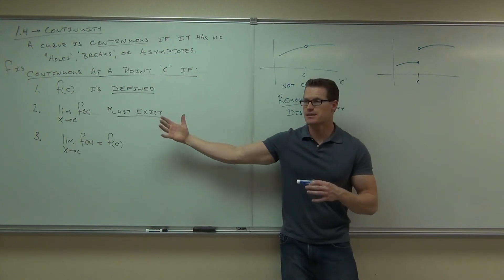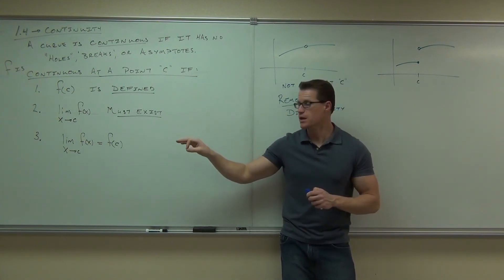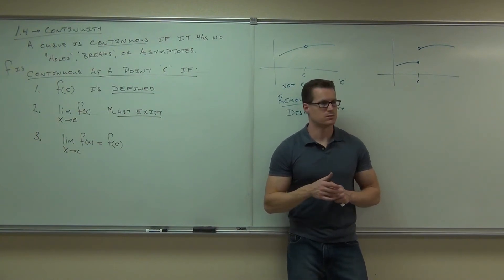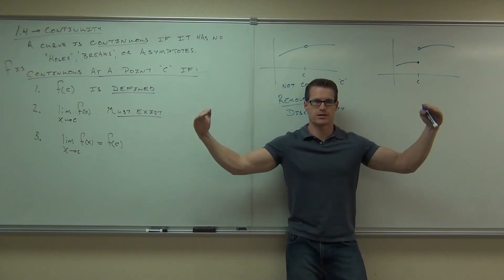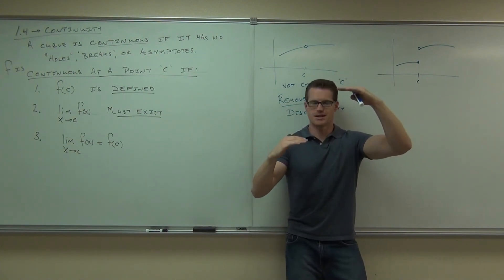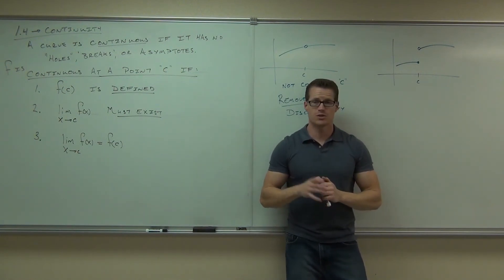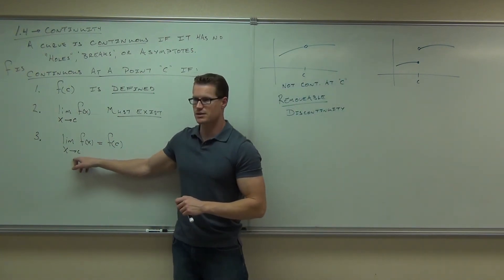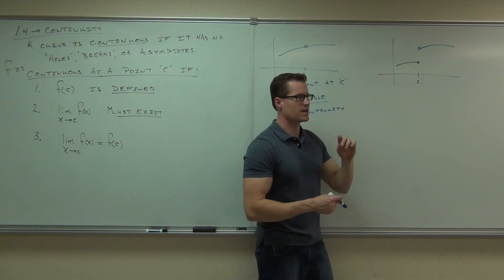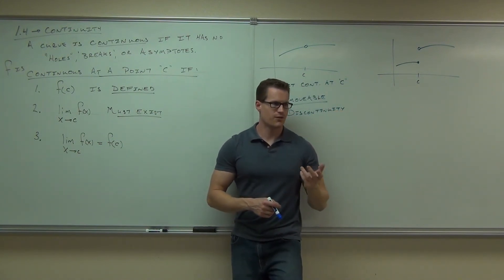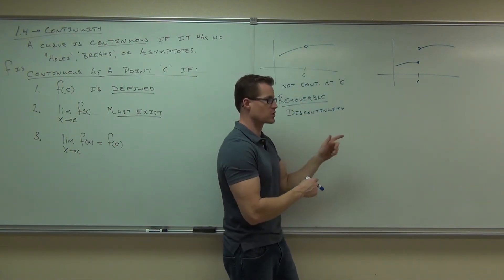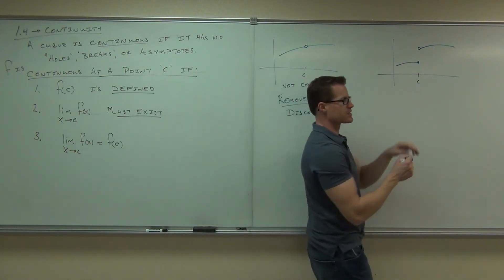Let's check our three conditions for our function to be continuous at point C. Number one: is there a point at C? Yes. Number two: does the limit exist — are we going to the same spot from both sides? It doesn't look like that; the two sides don't meet up. So number two is not satisfied. If number two fails, number three can't possibly be satisfied. This is not continuous at C. Is it a removable discontinuity? No — you can't continue the function with one single point here. This is a jump discontinuity.